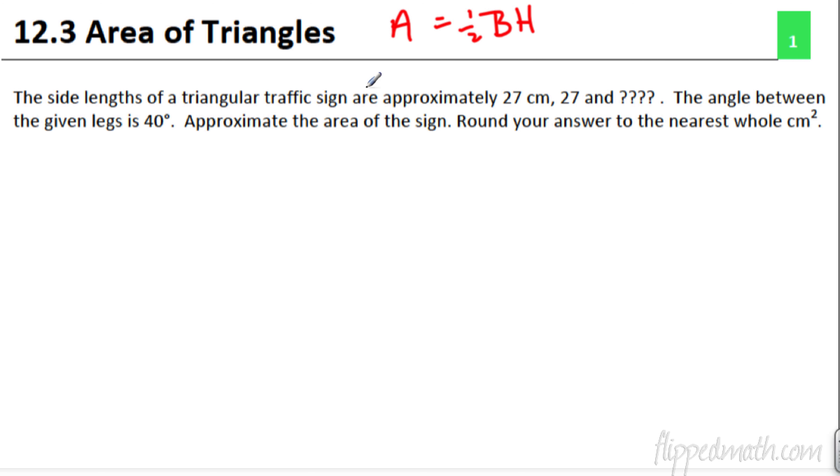The side lengths of a triangular traffic sign are approximately 27, 27, and question marks. The angle between the given legs is 40 degrees. Approximate the area of the sign. We can do that. Round your answer to the nearest whole centimeter squared. So let's draw a general triangle here.